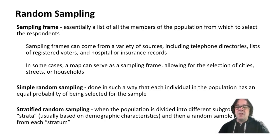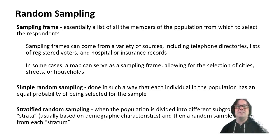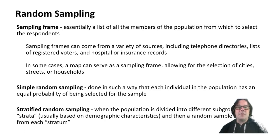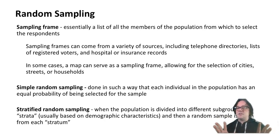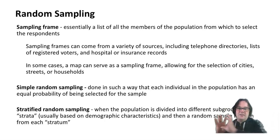Simple random sampling gives each individual in the population an equal chance of being selected for the sample. Stratified random sampling is when the population is divided into separate subgroups or strata — usually based on demographic characteristics such as race — and then random samples are drawn from each stratum.